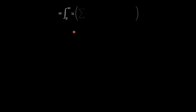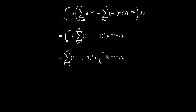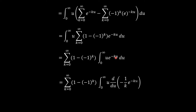We combine the constants, giving the factor (1 minus (negative 1)^k) times e^(negative ku). We then swap the summation sign and the integration sign, so inside the summation we have the integral from 0 to infinity of u times e^(negative ku). We note that e^(negative ku) is the derivative of negative 1/k times e^(negative ku).